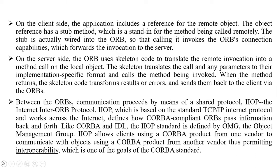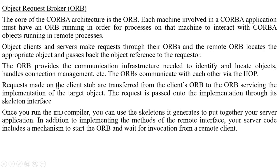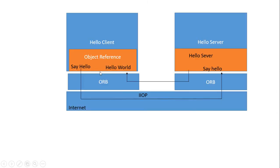The ORBs communicate with each other via IIOP — Internet Inter-ORB Protocol. Requests made on the client server are transferred from the client ORB to the ORB servicing the implementation of the target object. The request is passed on to the implementation through its skeleton interface, and the skeleton resides on the server side.